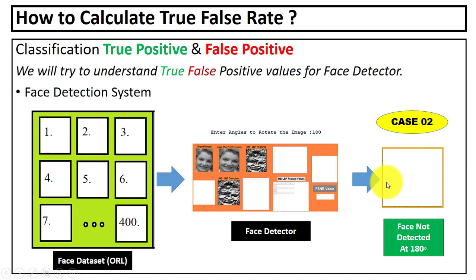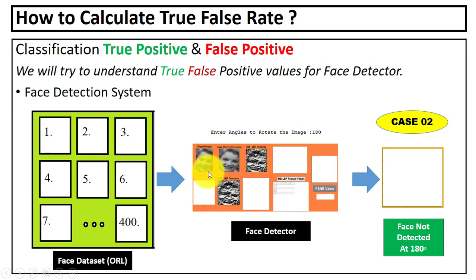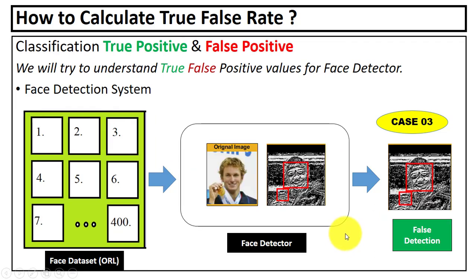Second case: again we selected a random image from the face dataset for testing, and when we applied this image to the proposed face detector, you can see we have a face in the image but it is not detected. Third case: again we selected a random image from the face dataset, and when we tested it on the face detector, you can see it detected something else that is not a face.